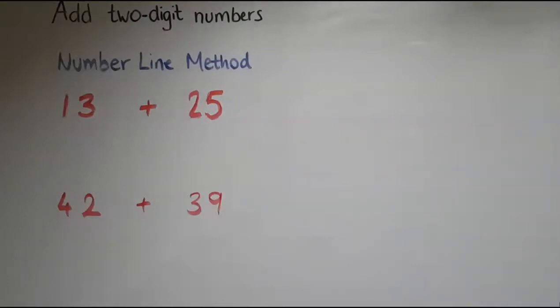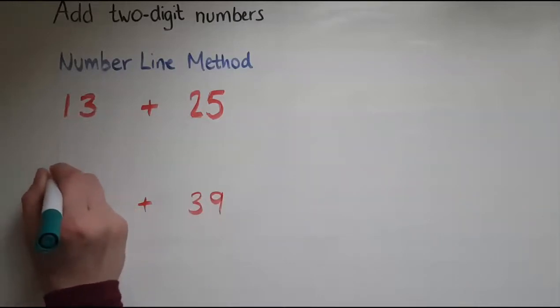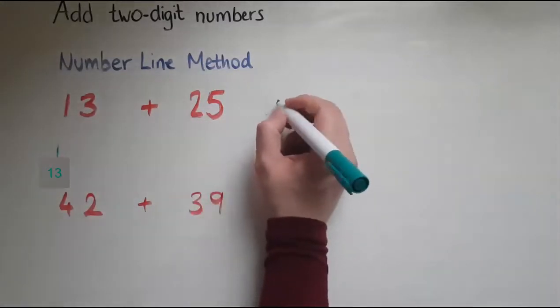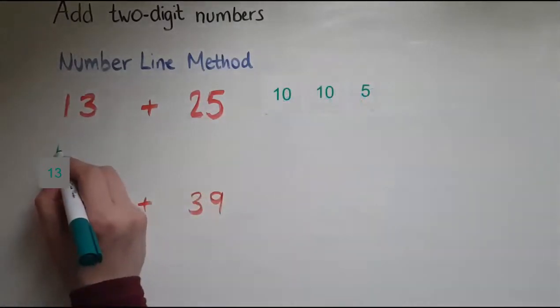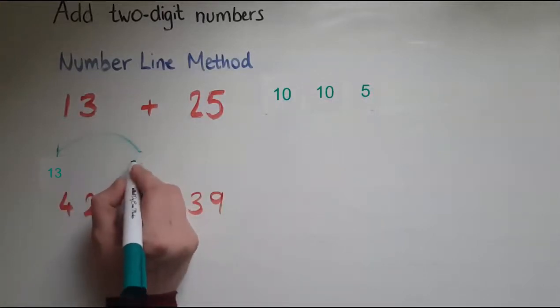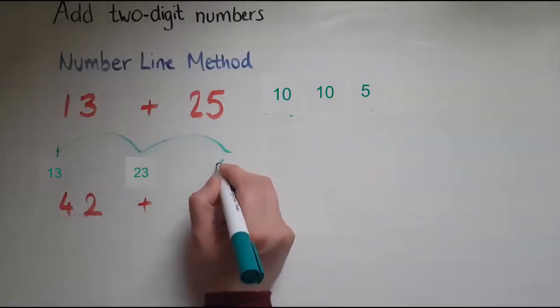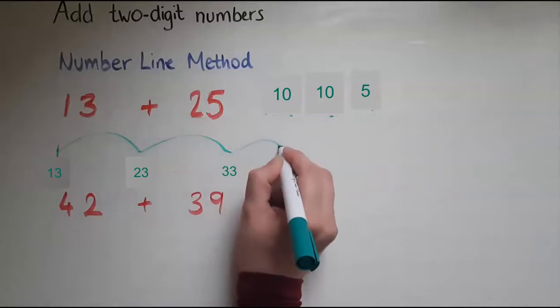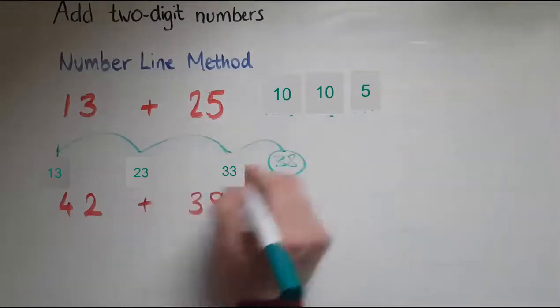In this video we'll learn to add two-digit numbers using the number line method. I've got 13 and 25, I'm going to add them together. So what I'm starting with is the number 13. What I'll do, I'll break the 25 down in my head into 10 and 10 and 5. So I've got 13. If I add 10, that makes 23. If I add another 10, that makes 33. If I add 5 now, that is going to be 38. So I've added all of them and my answer is 38.